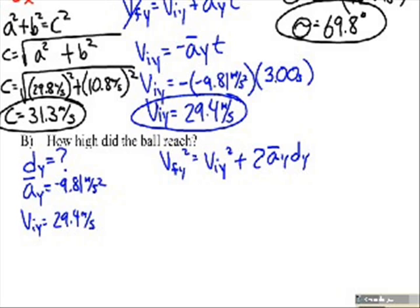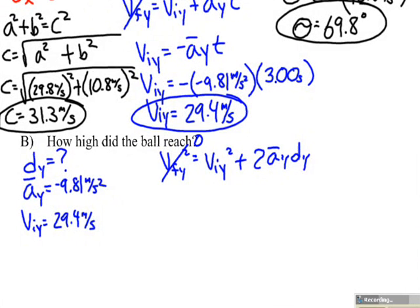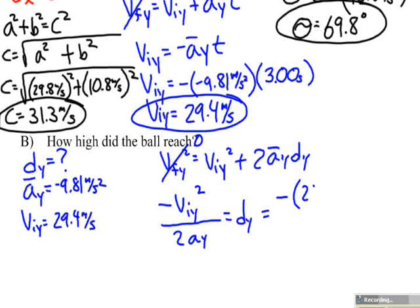I can go ahead and cross out my VFy squared because it's zero. If I rearrange this equation to solve for dy and get it all by itself, I wind up with negative Viy squared divided by 2Ay.